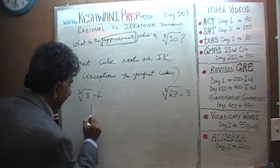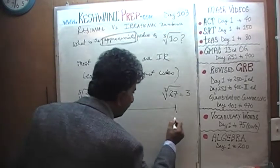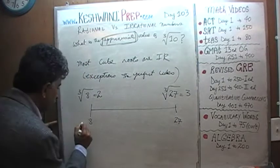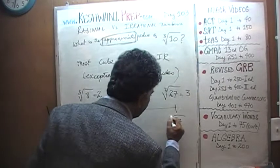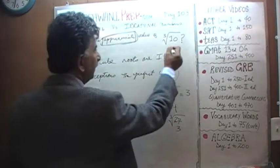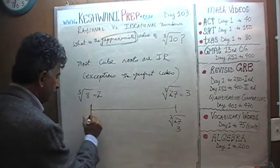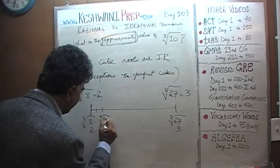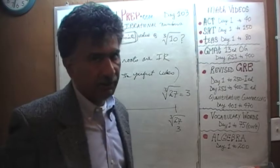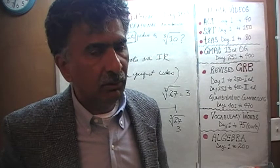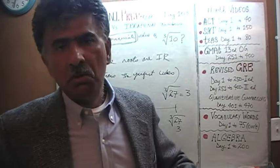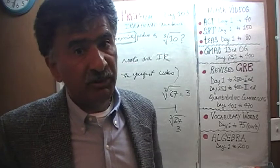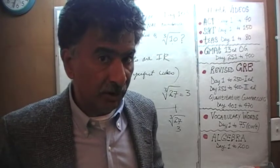The scale we are dealing with goes from 8 to 27. Cube root of 8 is 2, and cube root of 27 is 3. Because 10 is very close to 8 — here is 8, 9, 10 — cube root of 10 has to be something very close to 2. Maybe 2.1, maybe 2.2. We are going to find out the approximate value of cube root of 10 — it has to be either 2.1 or 2.2 or somewhere in between.